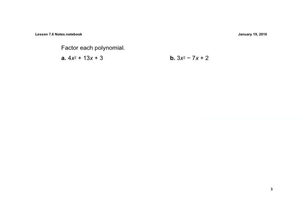So again, two more examples here. And if I look, the leading coefficient is 4, and 4 is not common in all three terms. So again, that indicates to me I'm going to use the Xbox method right away.